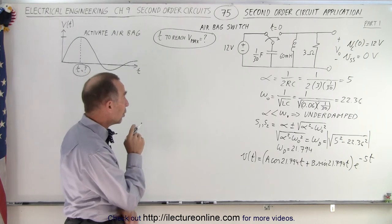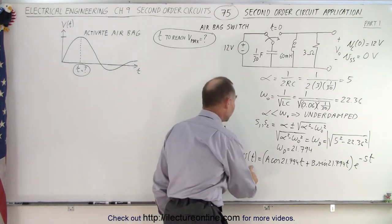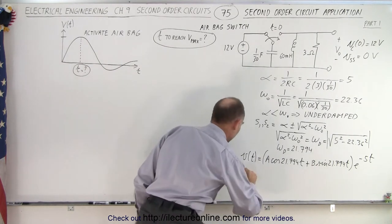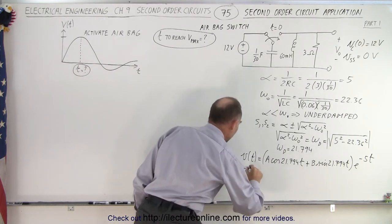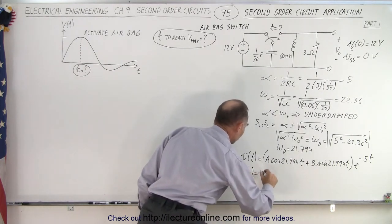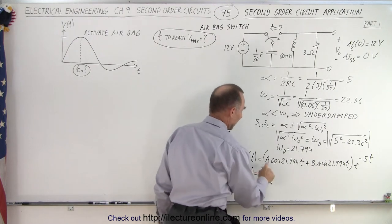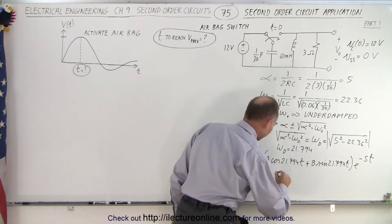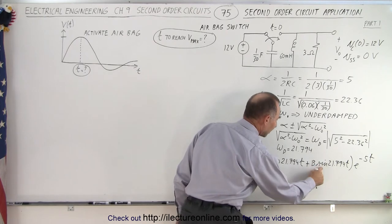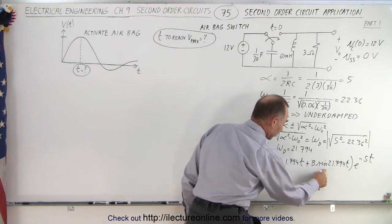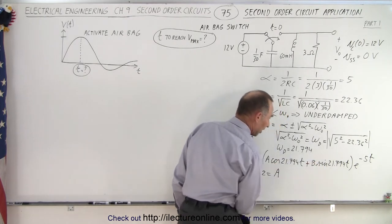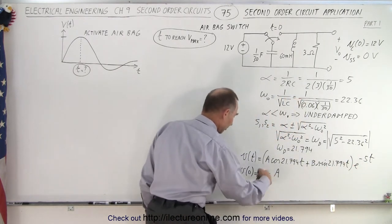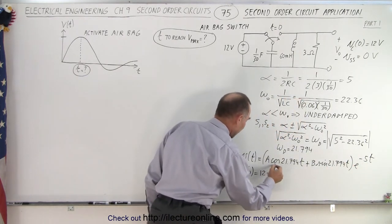We know that the voltage at time equals zero is going to be 12. Plugging that in: V at t equals 0 equals 12, which equals A times cosine of 0 — cosine of 0 is 1, giving us A — plus B times sine of 0, which is 0, so B drops off, and e to the 0 is 1. So simply we end up with A equals 12.